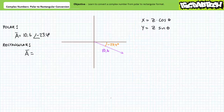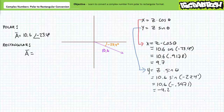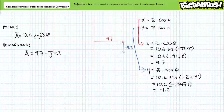Here's another illustrated example. Given a complex number in polar format as 10.6 at an angle of negative 23.4 degrees, let's express it in rectangular format. This angle places us in the fourth quadrant, so we expect a positive x and a negative y component. The horizontal real x component is the magnitude times cosine of the angle, giving roughly 9.7. The vertical imaginary y component is the magnitude times sine of the angle, giving roughly negative 4.2. Therefore, 10.6 ∠-23.4° equals positive 9.7 minus j4.2.